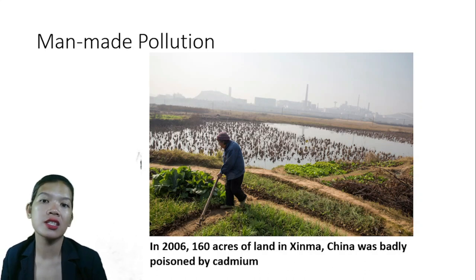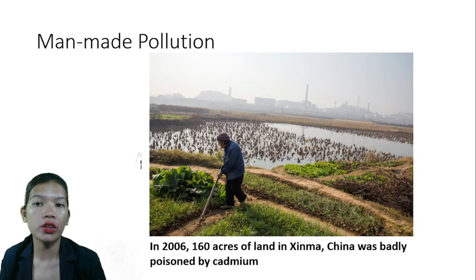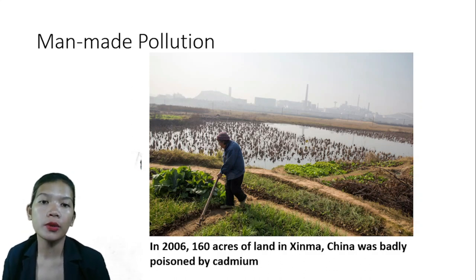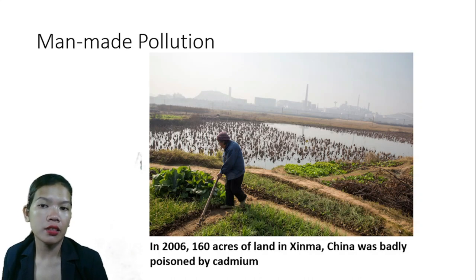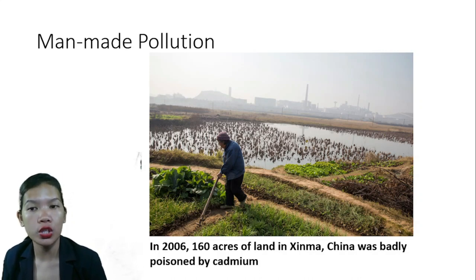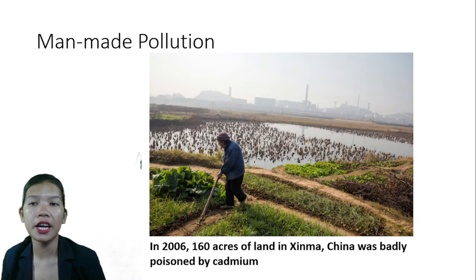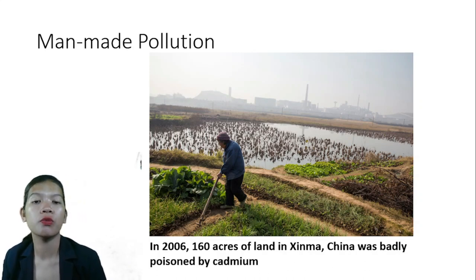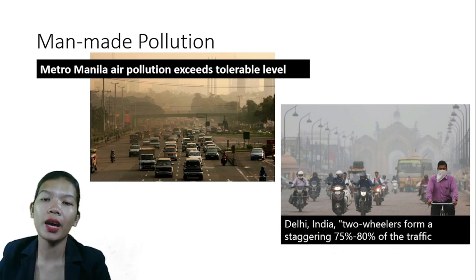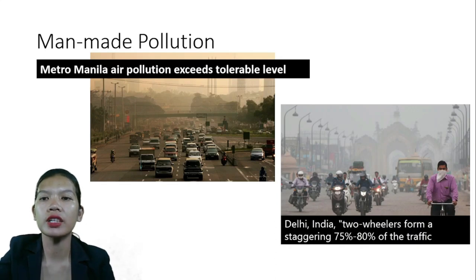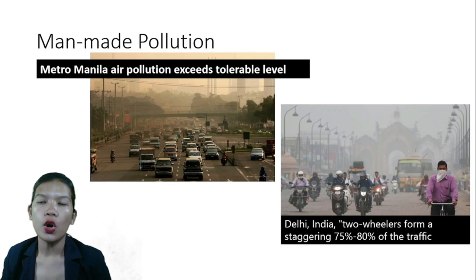In China, soil toxicity has raised concern over food security and the health of vulnerable populations, especially peasant communities and those living in factory cities. In 2006, for example, 160 acres of land in Xinmei, China were badly poisoned by cadmium — two people died, 150 were known to be poisoned, and the entire village was abandoned. Hong Kong faces similar problems.